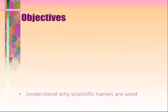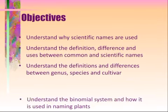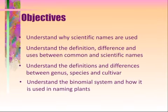Let's talk about our objectives for today. We will understand why scientific names are used when naming plants. We'll understand the difference between common and scientific names. We'll understand the difference between the genus, the species, and the cultivar. And we will understand the binomial system and how it's used in naming plants. Some of you guys might be familiar with this, some might not, so we will go through why this is important.